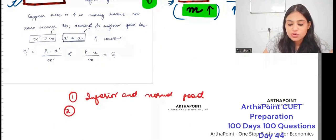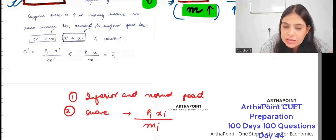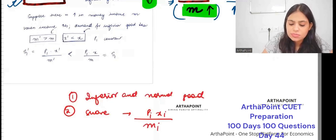Second, whenever the question talks about share, you should know it as PIXI by MI. Expenditure on the good divided by the income of the consumer. Third,